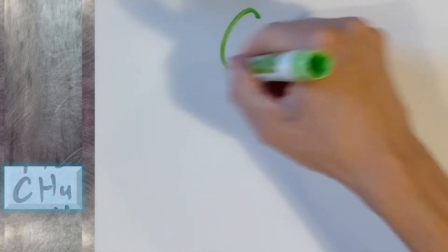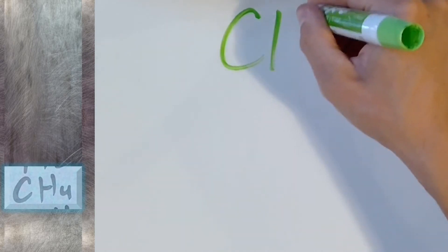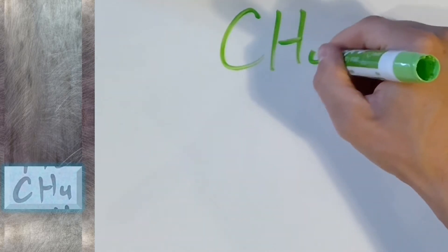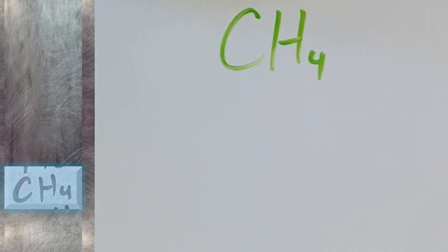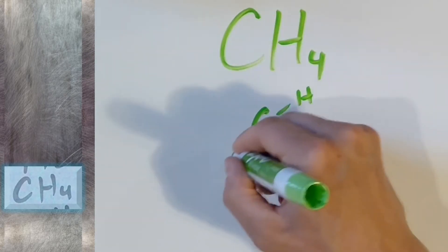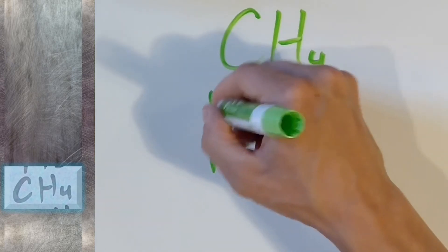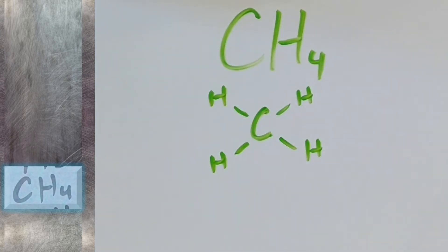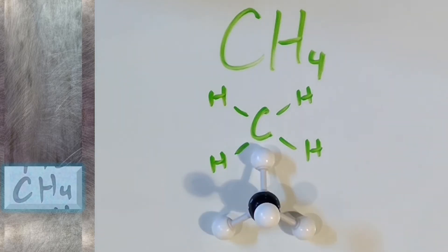Let's look at methane. Its molecular formula is CH4. It has one carbon bonded to four hydrogens. This is the molecular structure for methane. The carbon sits at the center and has four bonds. Each hydrogen has exactly one bond.